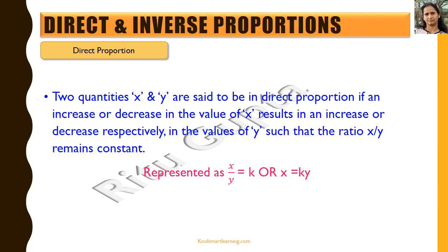We represent this by saying x by y is equal to k, where k is a constant, or we could also say x is equal to k into y. From x equals ky, we clearly see that if k is a constant, if x increases y increases, if x decreases y decreases and vice versa. Examples could be x equals 3y or y equals 5x — these expressions show direct proportionality between x and y.